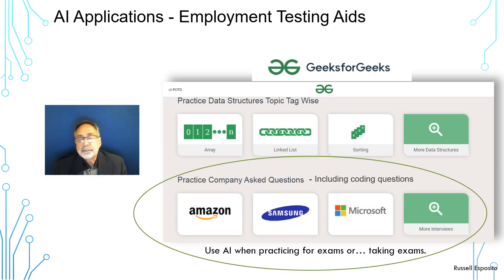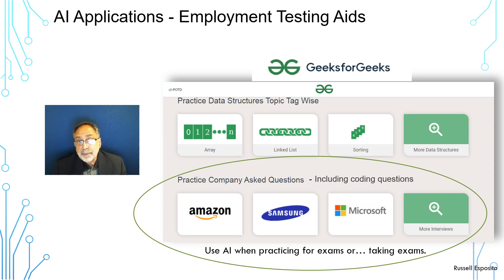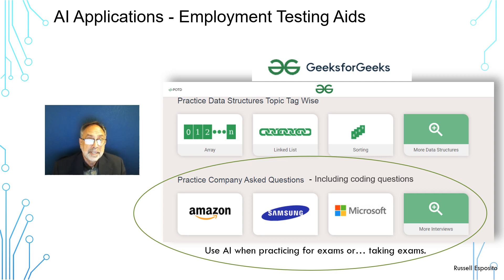For those with technical, IT, or programming careers, there's a site called Geeks for Geeks. They've collected tests for Amazon, Samsung, Microsoft, and others used when screening candidates for employment. You can use AI as you practice, and you may even be able to use AI during the test. People are using AI to help them train themselves and answer questions when practicing for and taking these technical assessments.